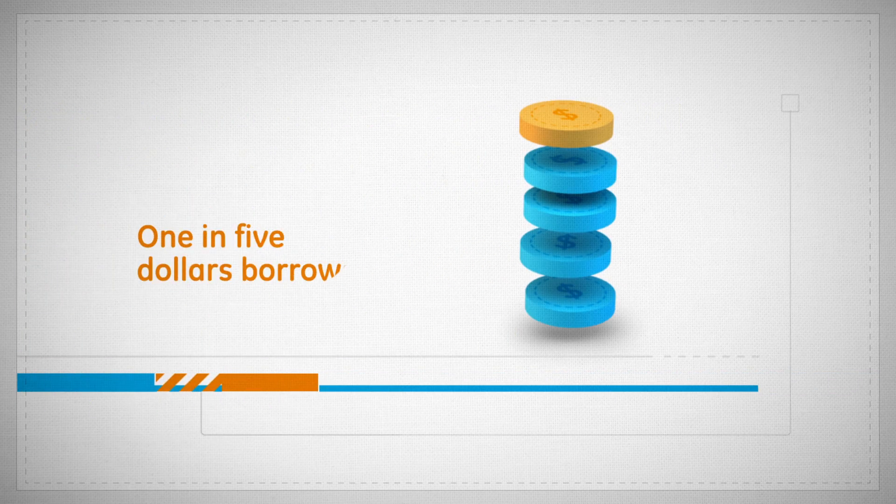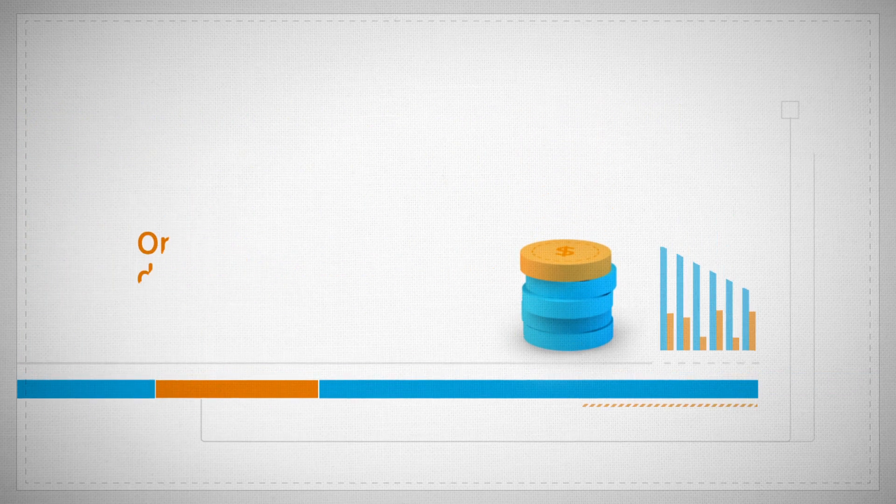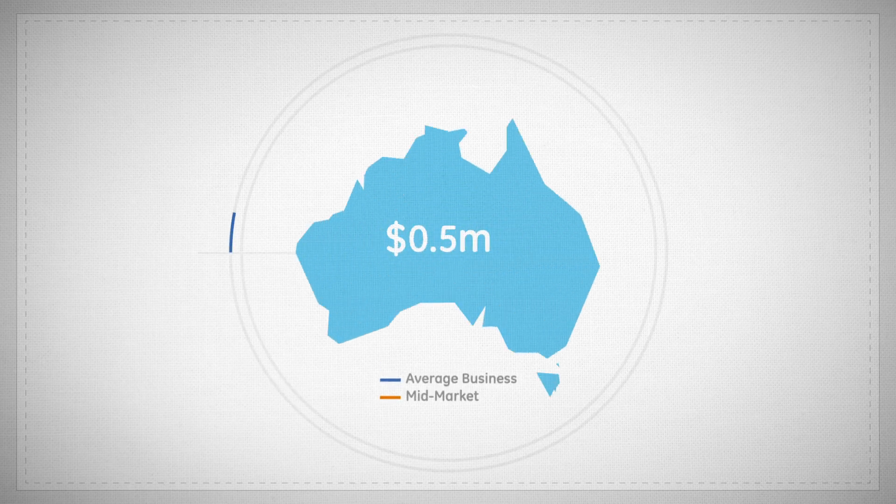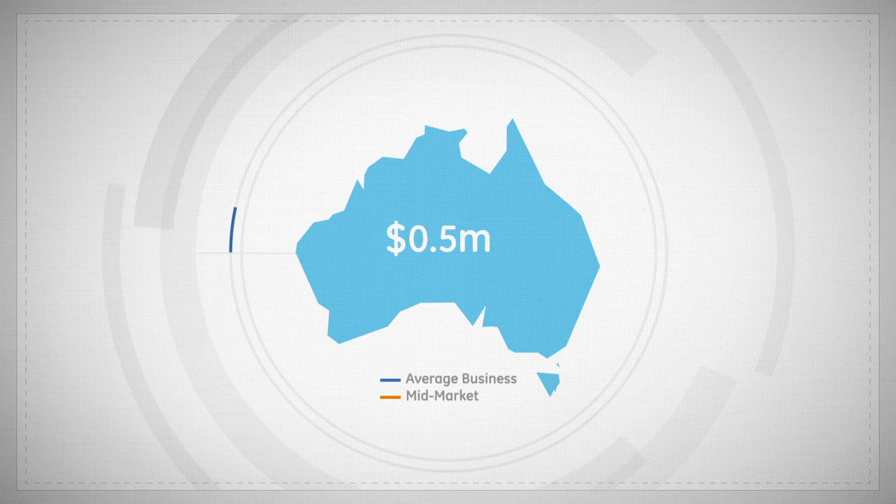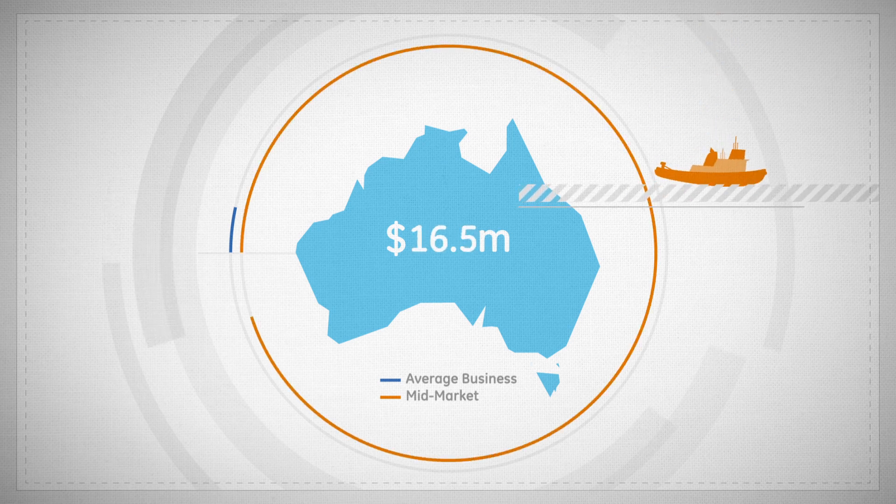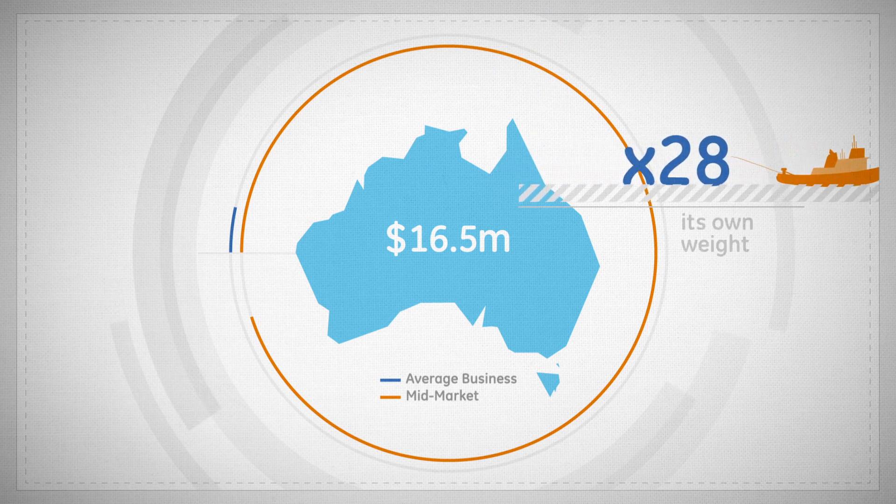On average, an Australian business contributes half a million dollars to the total GDP, whereas a mid-market business contributes $16.5 million. That means a mid-market business carries over 28 times its weight.